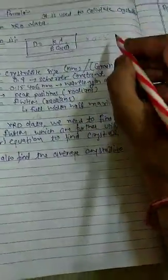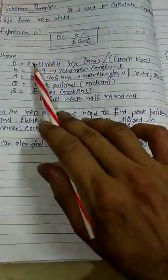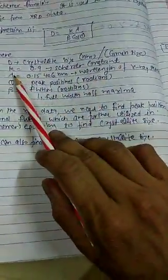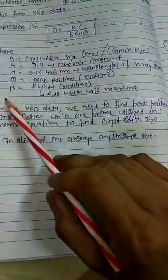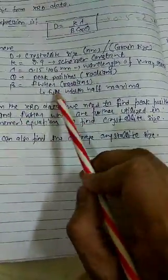I hope you remember yesterday we discussed that the X-ray range is 0.5 to 2.5 Angstrom, so this is the typical wavelength we took, 0.15 nanometer. Theta is the peak position in radians and beta is the full width half maximum, FWHM.